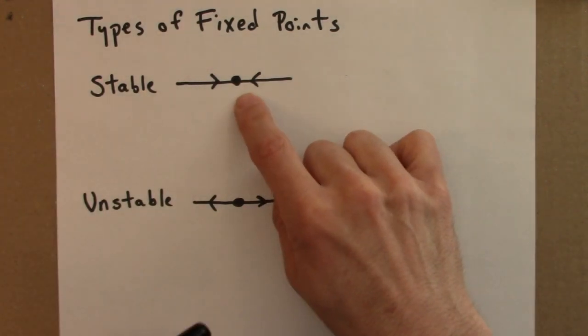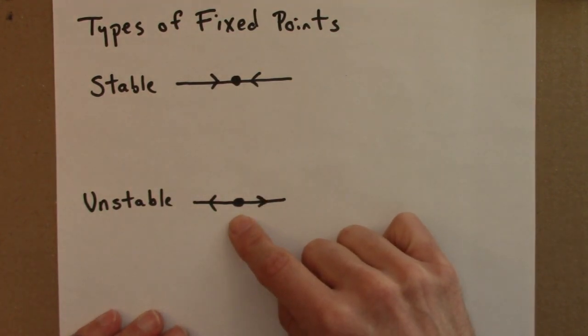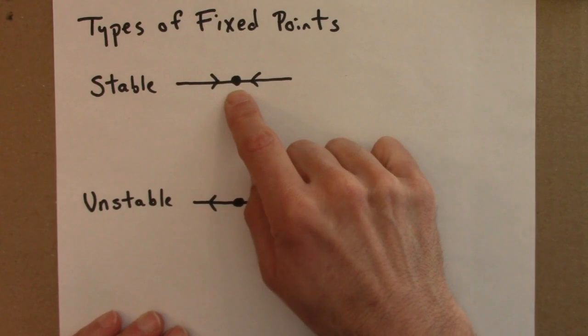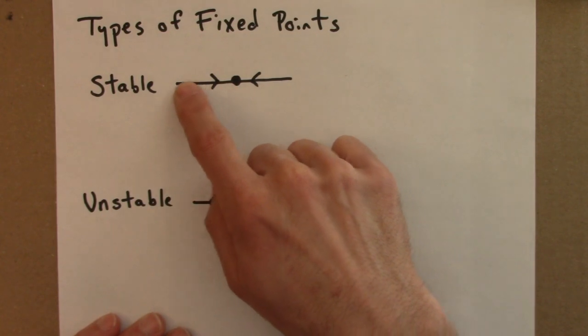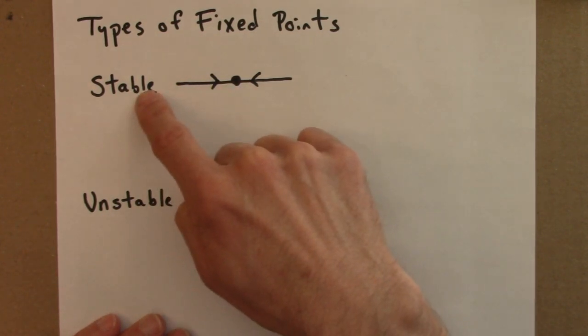Here's an illustration of a stable fixed point, and here's an illustration of an unstable fixed point. The fixed point is the black dot. It doesn't change when the function acts on it. And this shows us that nearby points get closer to the fixed point, hence it's stable.